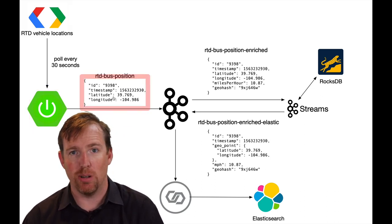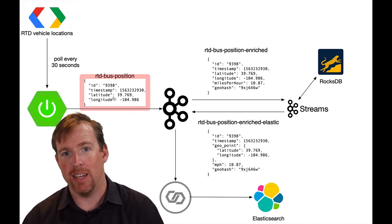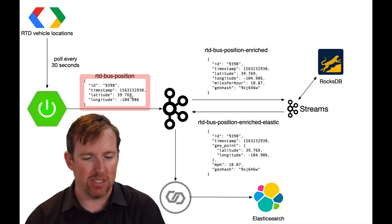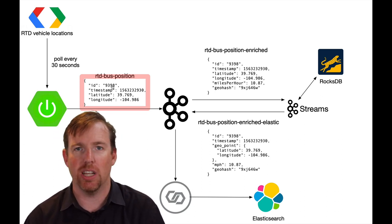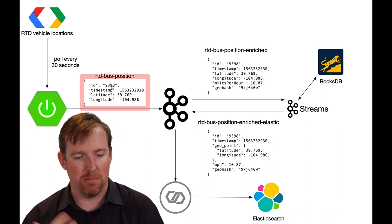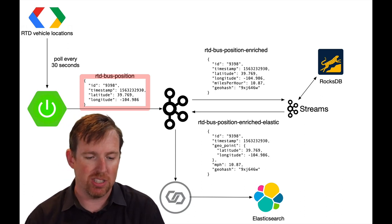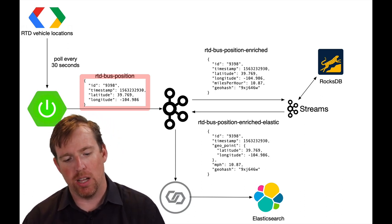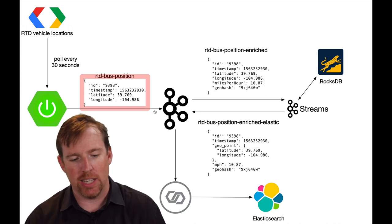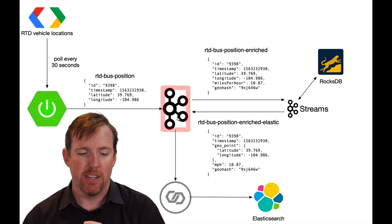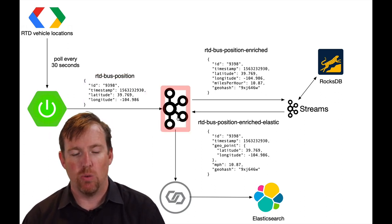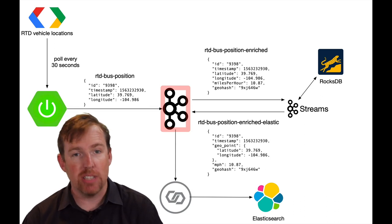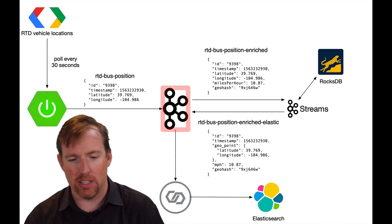This is an example of the message I'm pulling out. It has an ID which is an identifier for the bus, a timestamp, and a lat/long. I'm writing these into Kafka, and once I've got that in Kafka I can use Kafka Streams to analyse it.